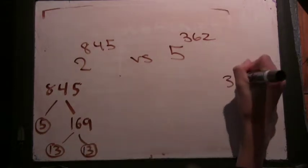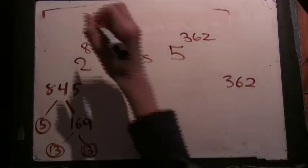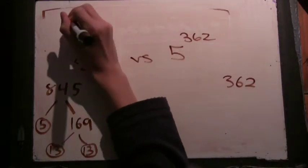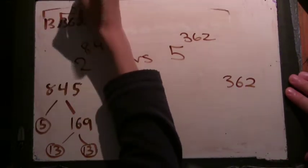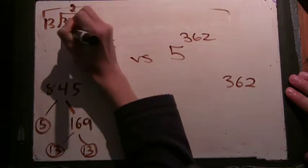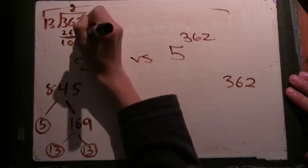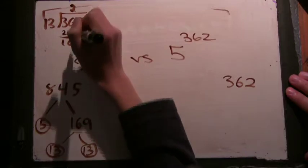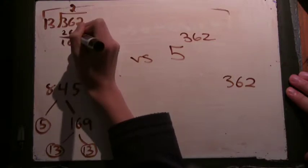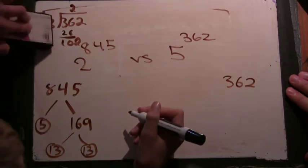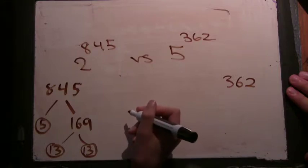362. Well, see if it has any common factors. We could try to divide it by 13. So it doesn't look like it. 13 times 7 is 91, so it would be 104. And we also know it's not divisible by 5 either.